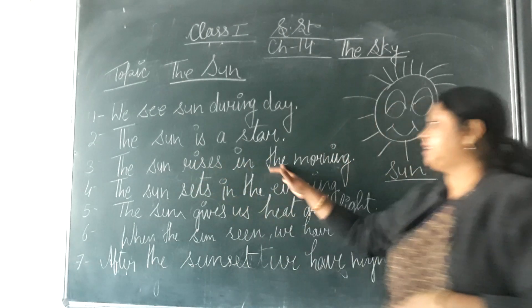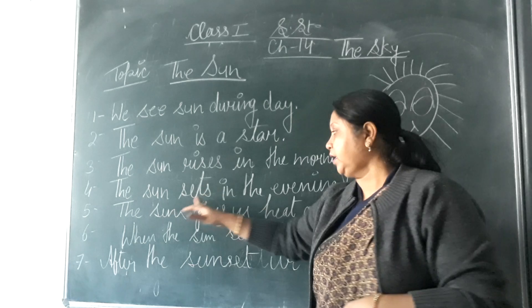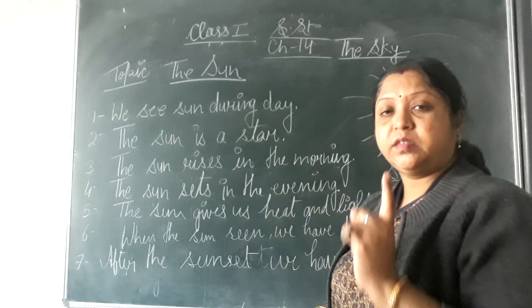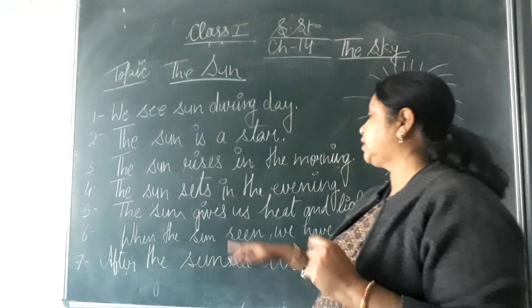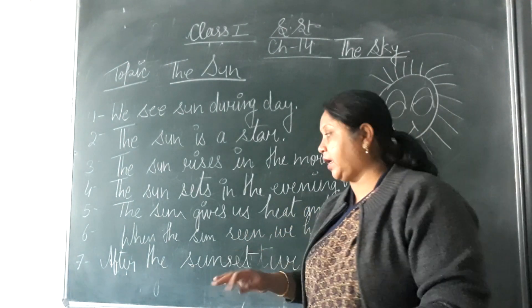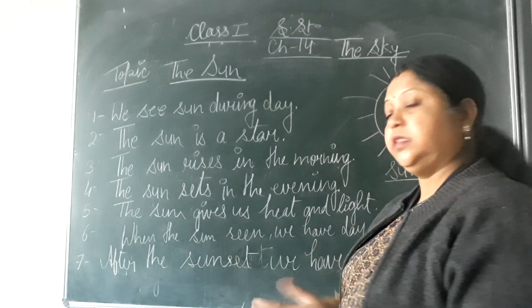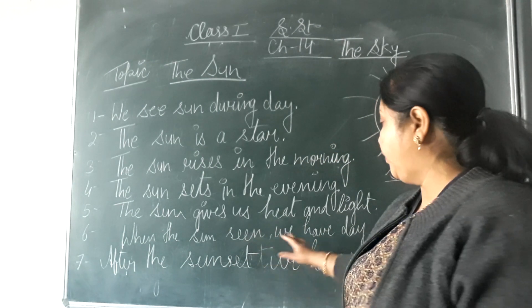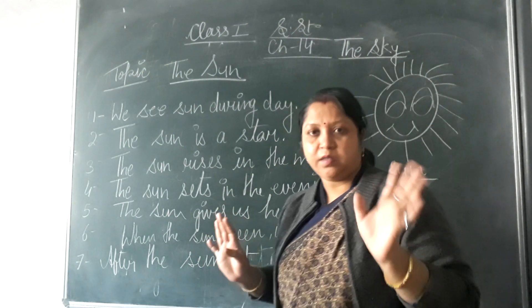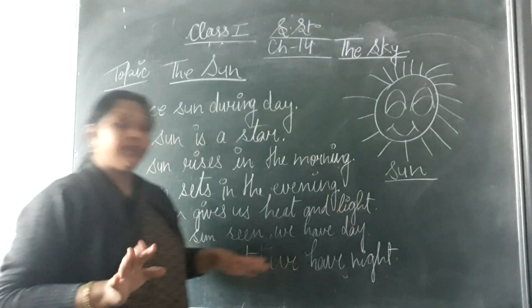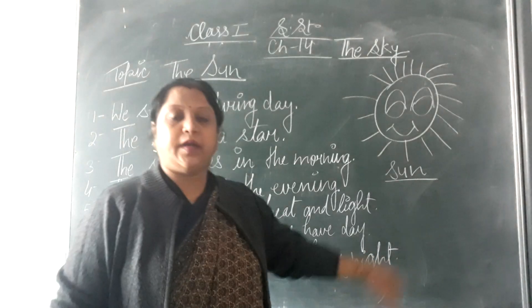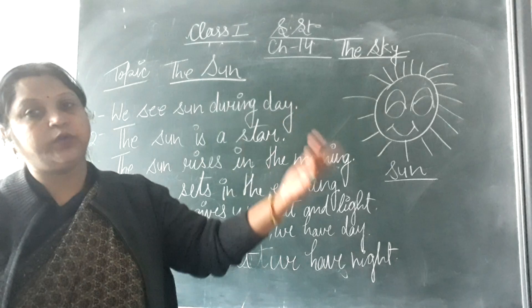The sun rises in the morning. The sun sets in the evening. The sun rises in the east direction and sets in the west direction. The sun gives us heat and light. When the sun rises, we have day. After the sunset, we have night.